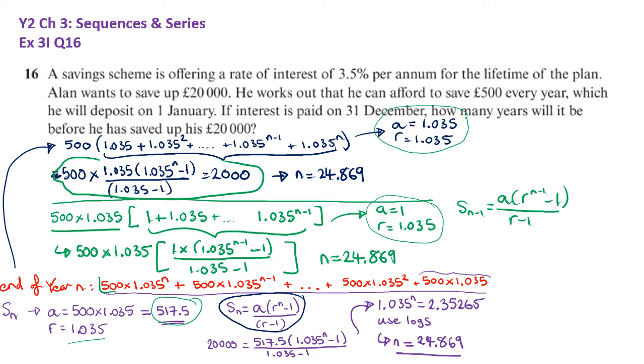There's one further possible thing you might have done. That's if you go back to look at this sum here, the end of year n, was on the 31st of December. What you might have also done is you might have added 500. And then we're looking at the 1st of January. And then you would have got, you could potentially have had a is 500 and r is 1.035. Solving for when that is 20,000. I believe you've come up with n is 25.4486. Equally valid and absolutely fine.